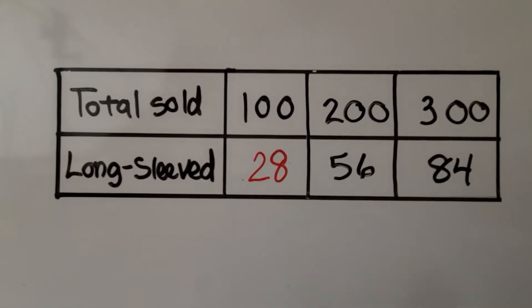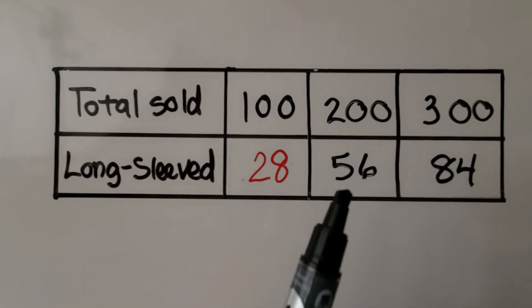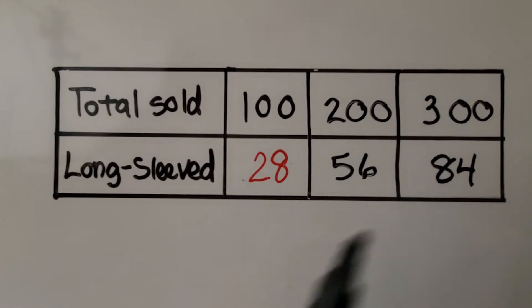Out of every 100 sold, 28 were long sleeved. So if he sold 200, that's 56 long sleeved t-shirts, and 300, that's 84 long sleeved t-shirts.